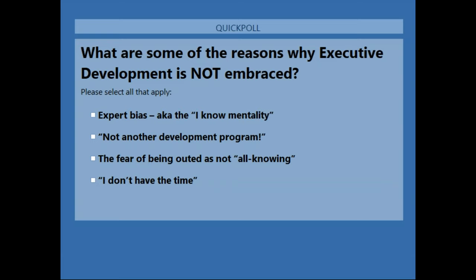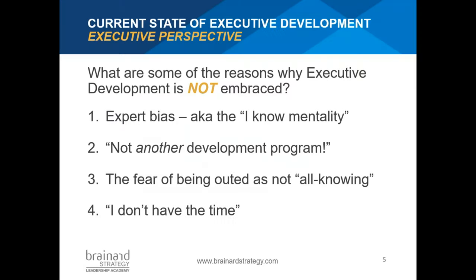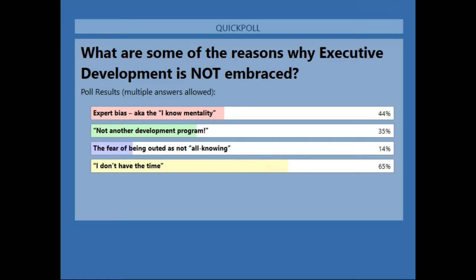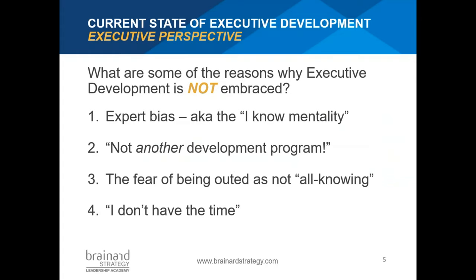Thank you for your replies. Time is our winner — the commodity that can't be given back. Time and expert bias are the clear winners in this poll, and light research from the Academy of Management would validate those findings: 'I don't have the time' and 'I already know this stuff.' As we build programs, we have to design workarounds — in both communication and actual design — around time and expert bias.